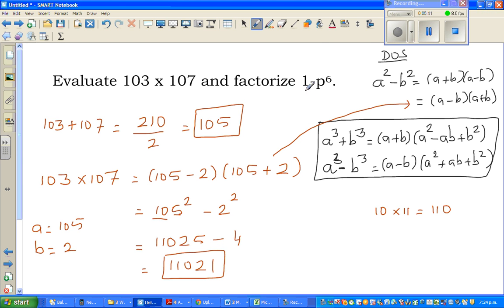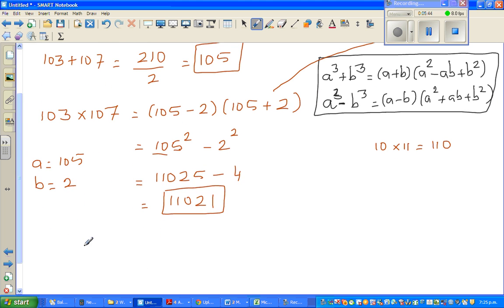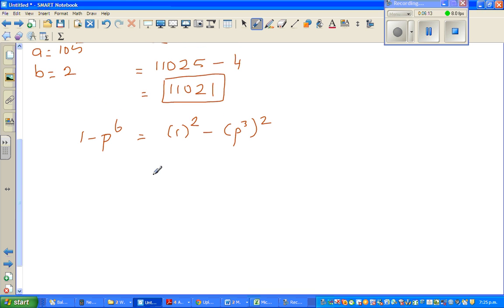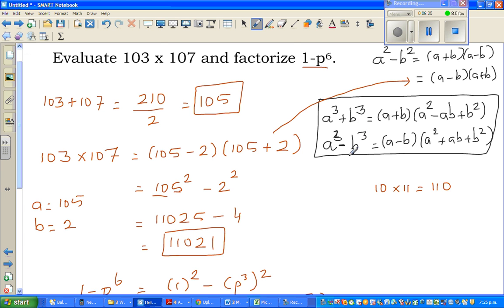Now we're going to factorize 1 minus p to the power 6. I can write this as 1 squared minus p cubed squared, because 3 times 2 is 6. Power of power, you multiply the power. This is nothing but using difference of 2 squares. It is 1 minus p cubed times 1 plus p cubed. Now we're going to use this formula, a cubed plus b cubed and a cubed minus b cubed.